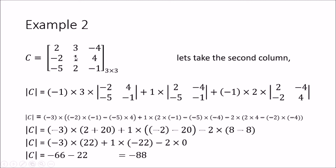Then we have plus 1 — the sign convention at the 2,2 position is also plus — multiplied by the determinant of the submatrix obtained by removing the second row and second column, leaving 2, minus 4, minus 5, and minus 1. And then, since the sign convention at the 3,2 position is minus, we take minus 1 into 2, multiplied by the determinant of the submatrix obtained by removing the last row and second column, leaving 2, minus 4, minus 2, and 4. Expanding: minus 3 times minus 2 into minus 1 minus minus 5 into 4; plus 1 times 2 into minus 1 minus minus 5 into minus 4; plus minus 2 times 2 into 4 minus minus 2 into minus 1. This gives plus 2 plus 20, minus 2 minus 20, and plus 8 minus 8, which equals 0.